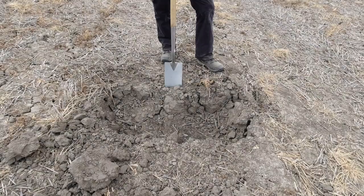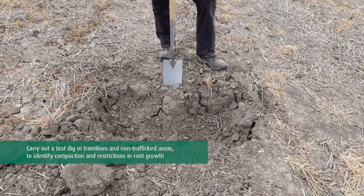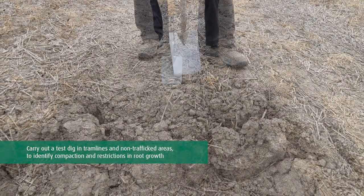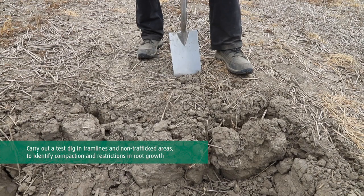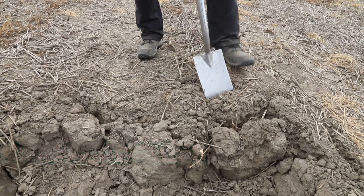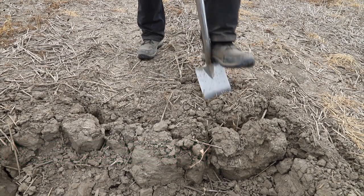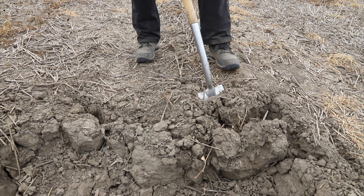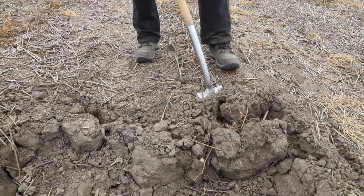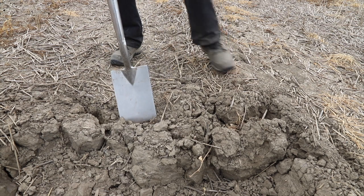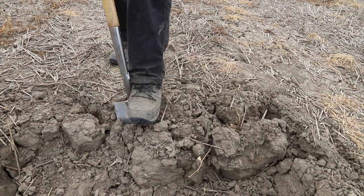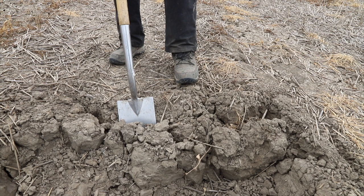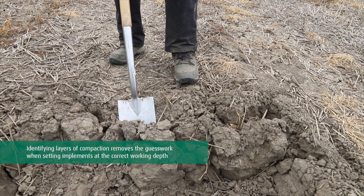From this test dig, you can see the different layers of compaction within the profile. We can see here that the soil within the non-trafficked areas is looser and more friable with good vertical fracturing, whereas the soil beneath the tramline is tighter and shows distinct areas of restriction.